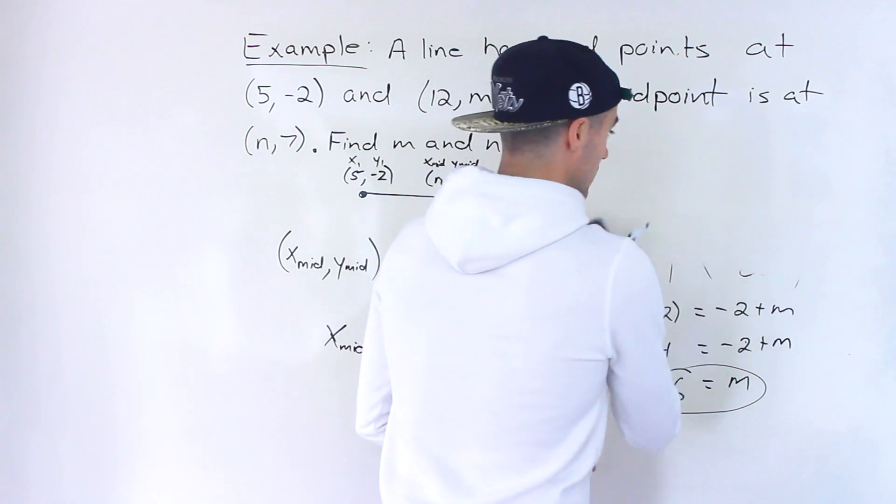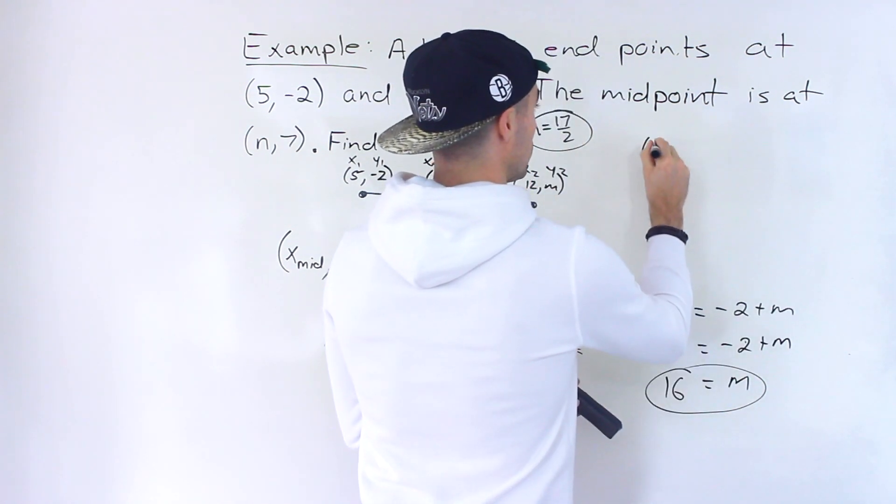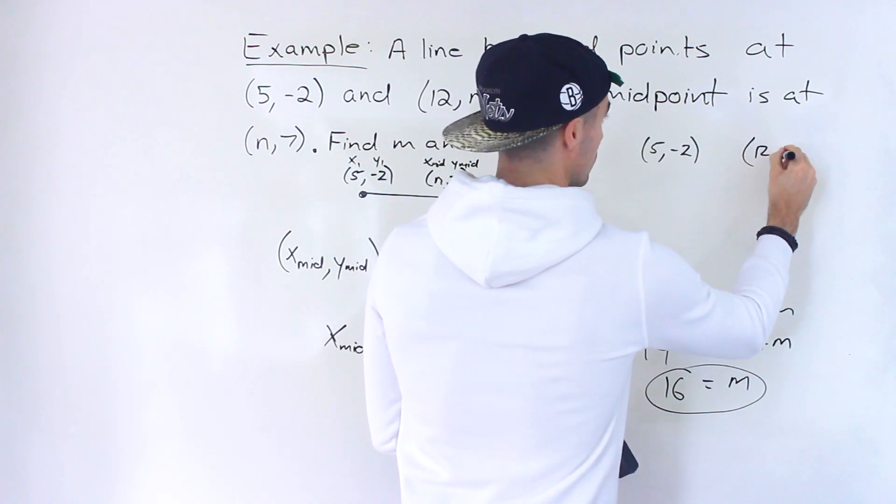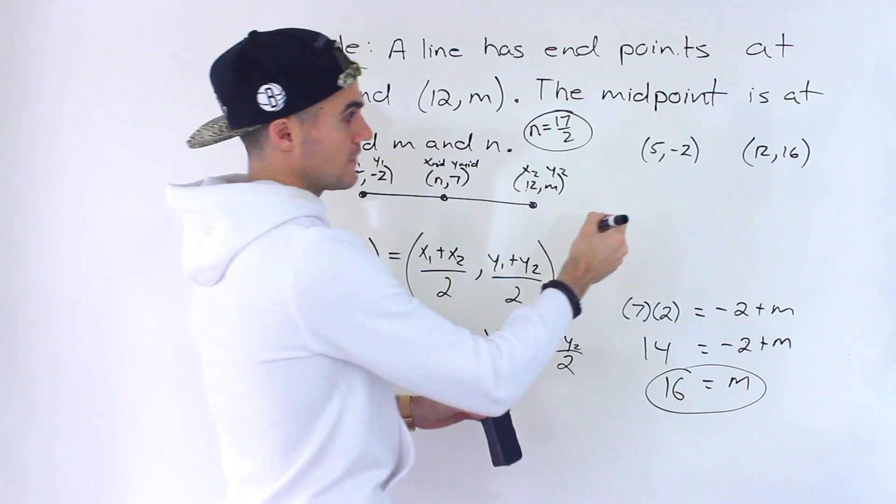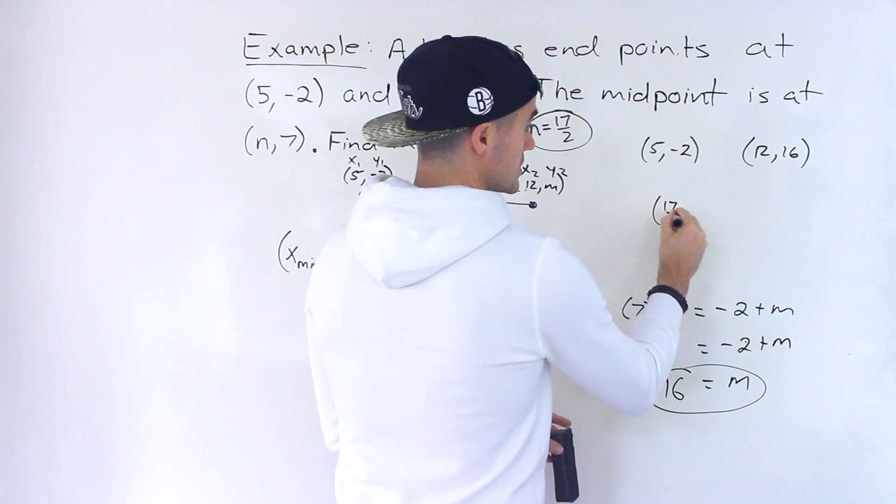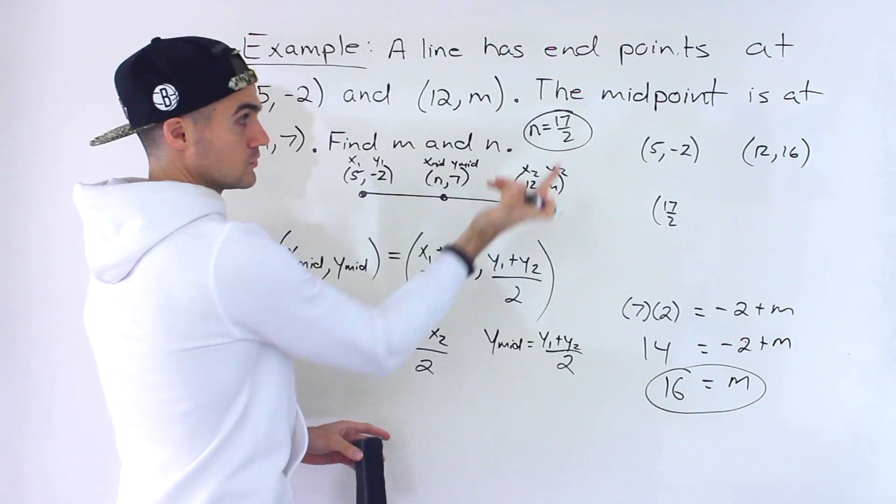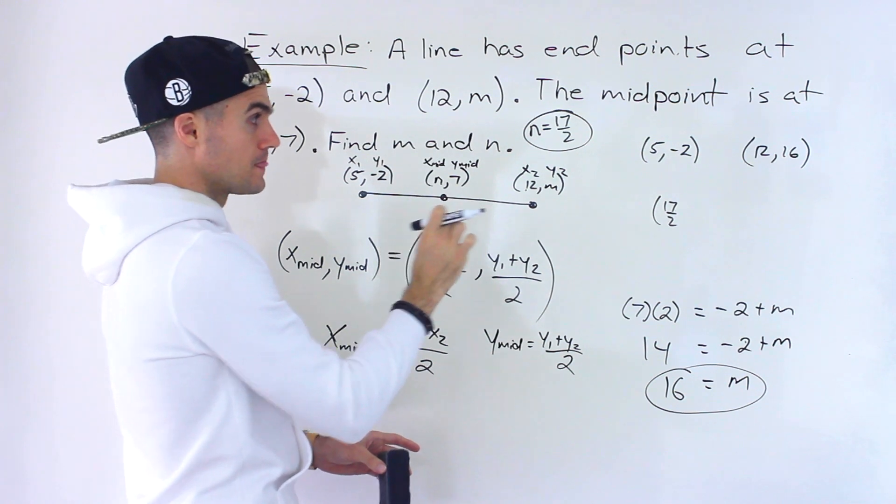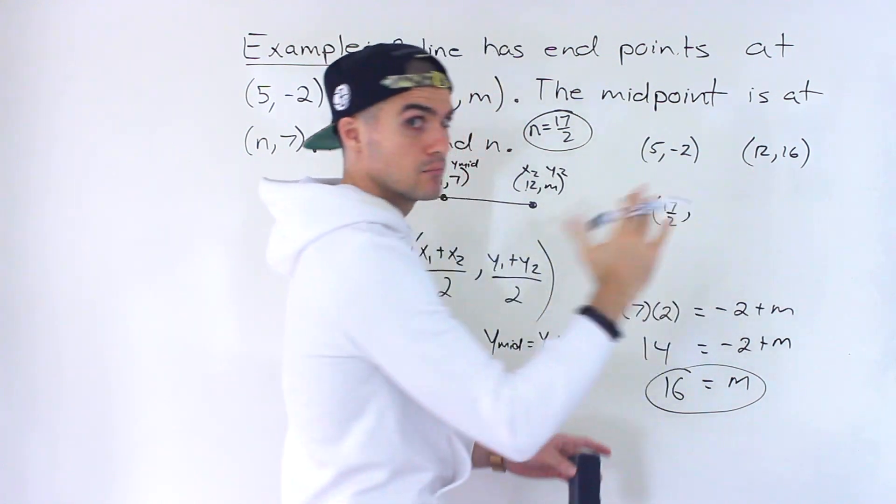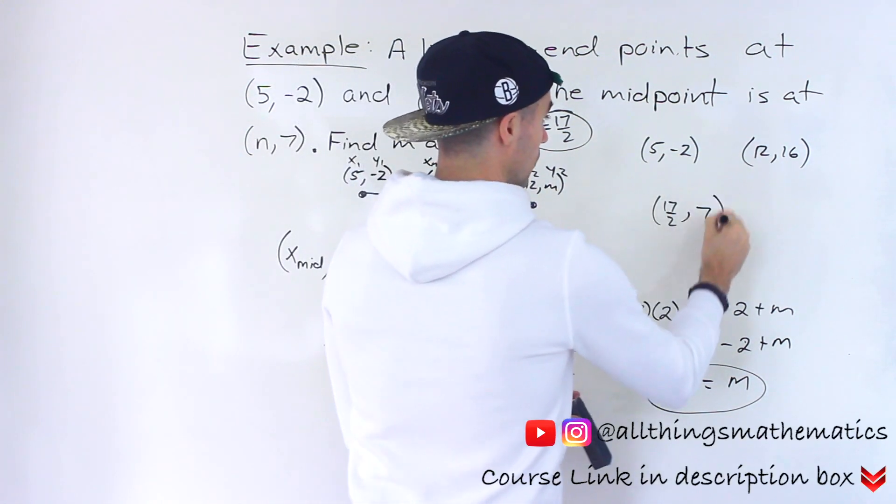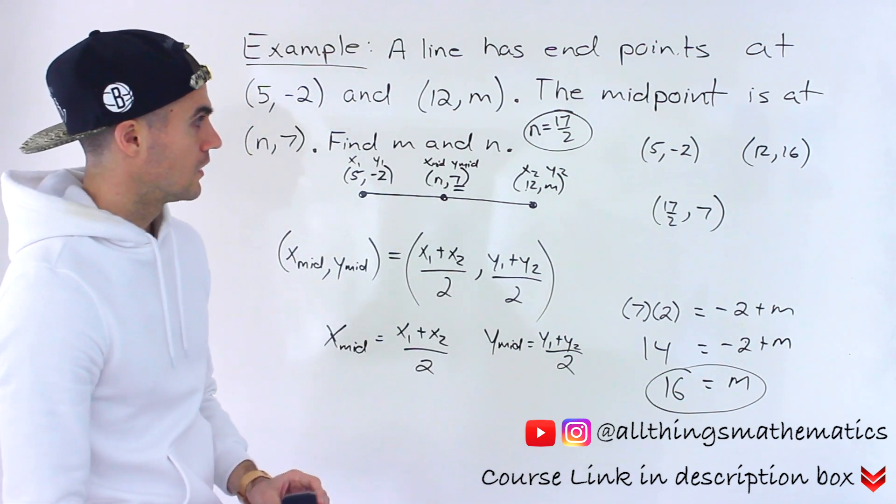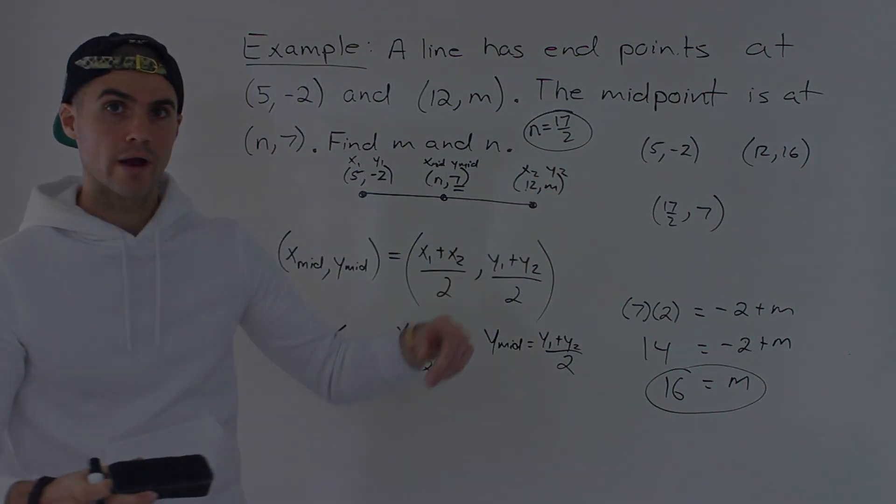And then if you have the time, you can check your answer. So if we're given endpoints 5, -2, and we're given the endpoint 12 and 16, well, if you find the midpoint of these, 5 plus 12 divided by 2 would give you 17 over 2, which is the x value of the midpoint, which is the n value. And then 16 plus -2 would give you, it'd be like 16 minus 2, which is 14, divided by 2 would indeed give you 7, which is what we were given. All right, so we can be pretty confident that those are the correct solution.